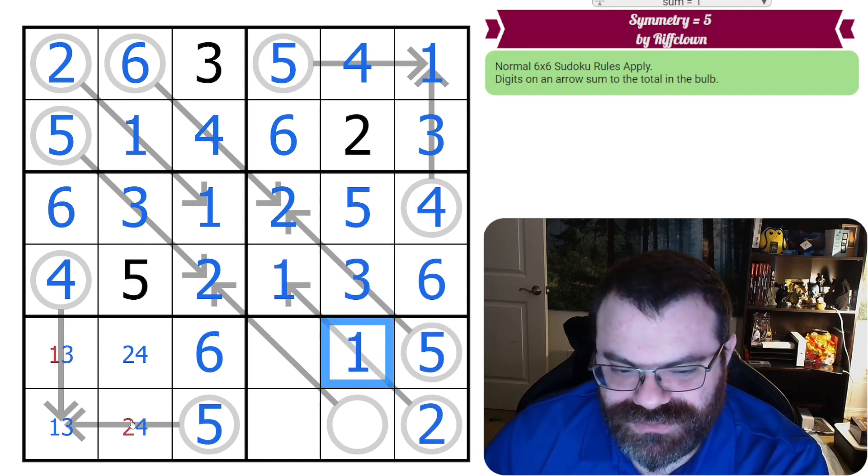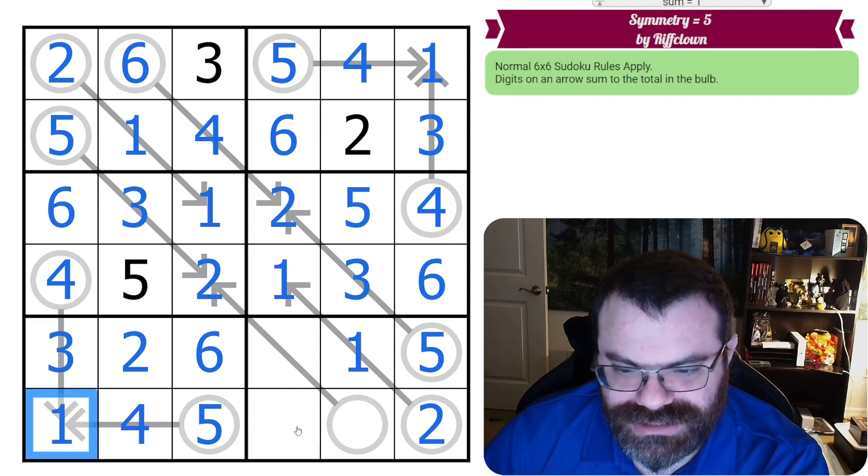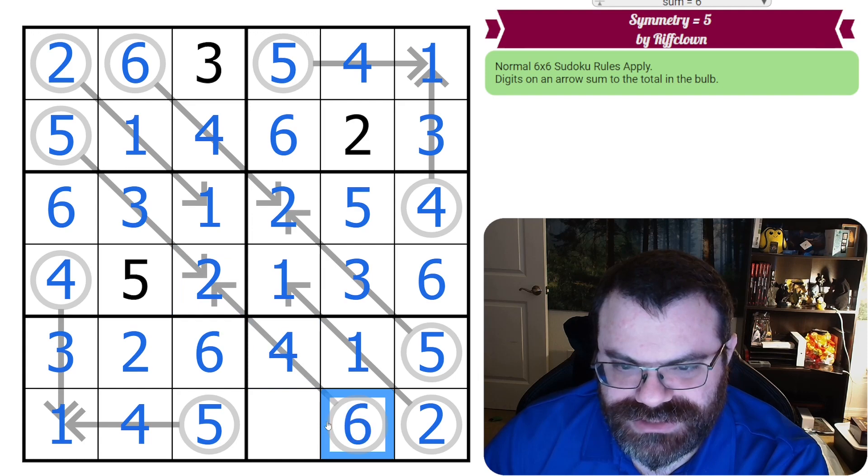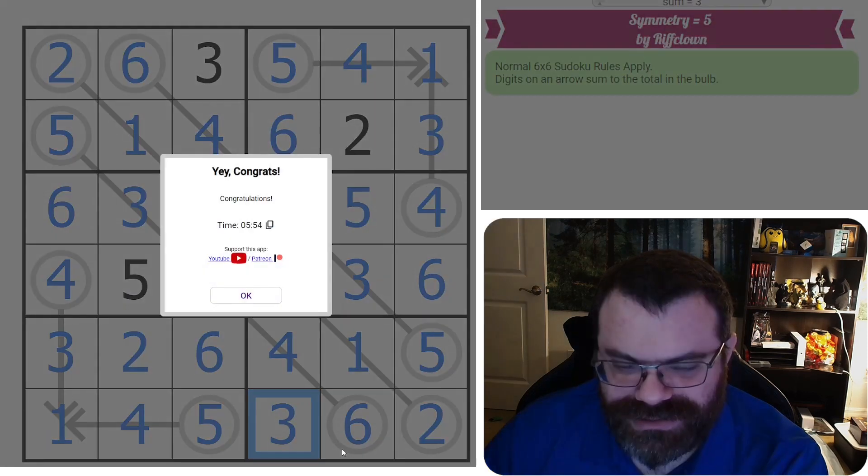This is a 2. So that's 1 plus 1. That's 4 and 2 and 3 and 1. Nice. And then finish the row with a 4. 2 plus 4 is 6. And this is a 3. Nice. That was a cool use of overlapping arrows, RiftClown. I hope I did it justice.